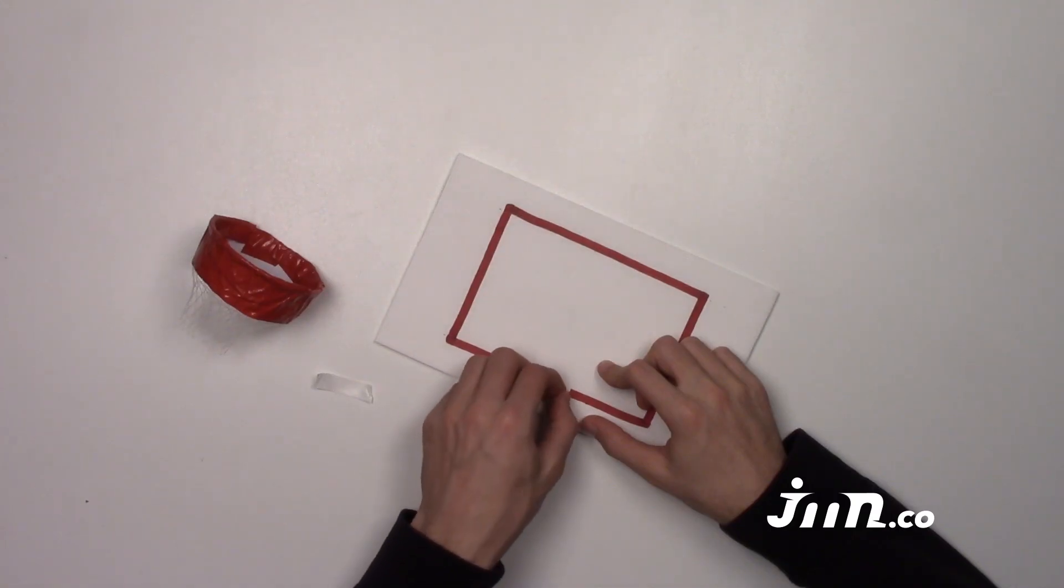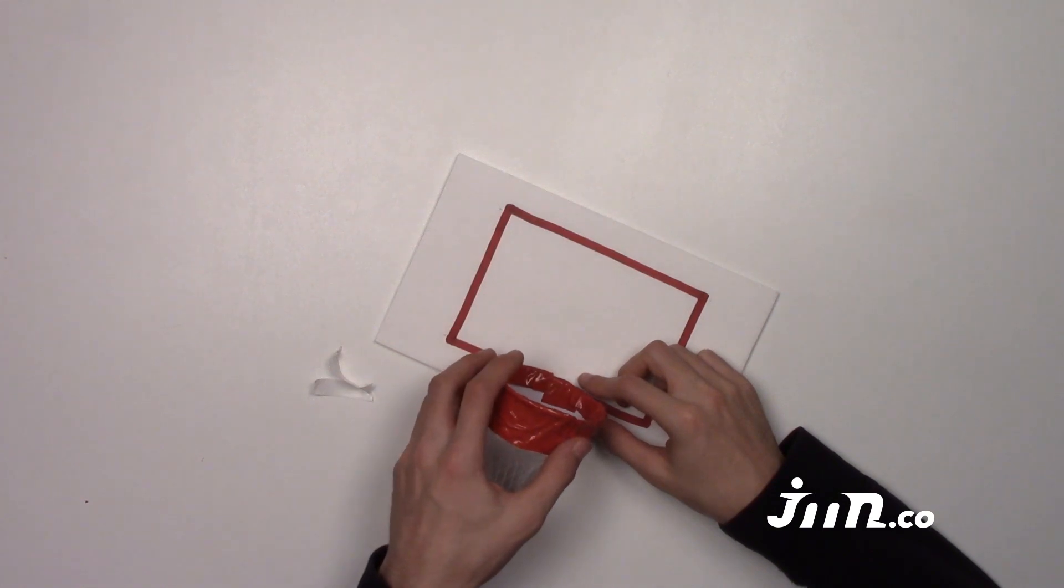Step 6: Place the double-sided tape on the bottom center of the board and attach the hoop.